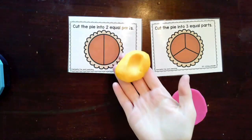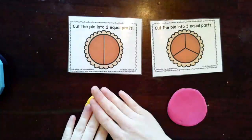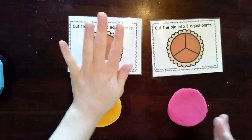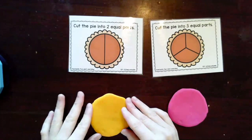So grab your play-doh, roll it into a ball, and then squish it down so that it makes a circle. You can always flip it over so that your circle looks a little neater.